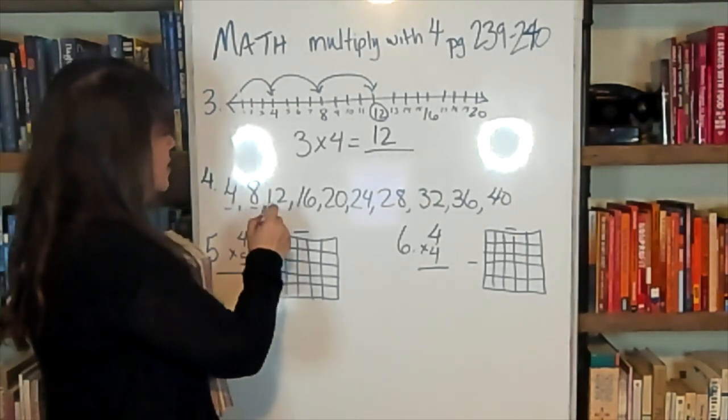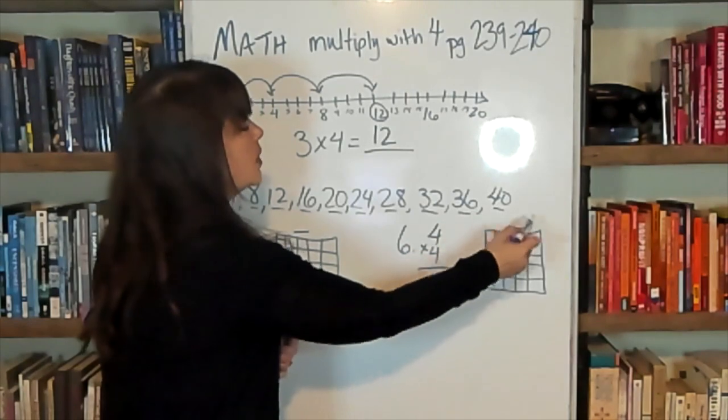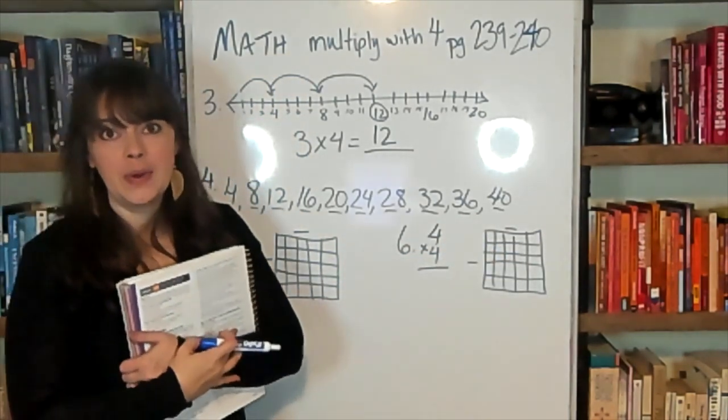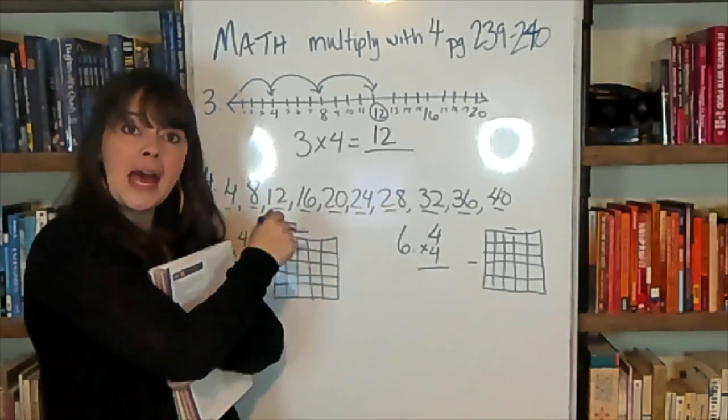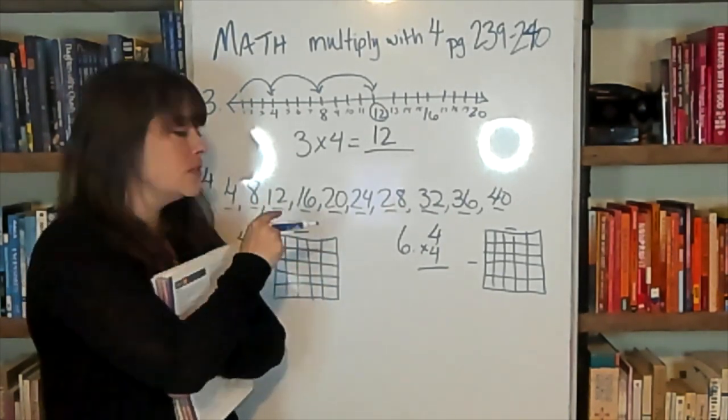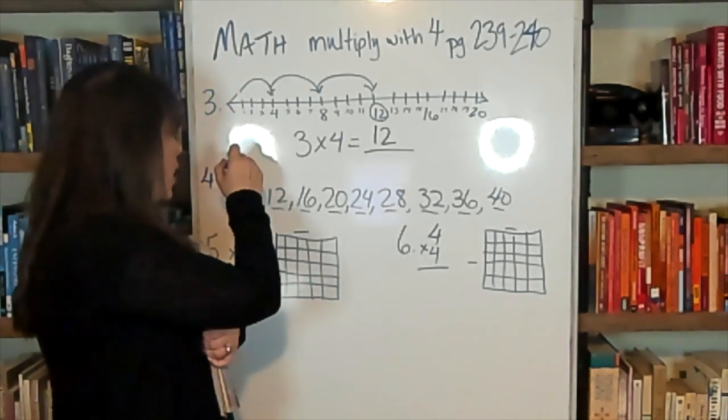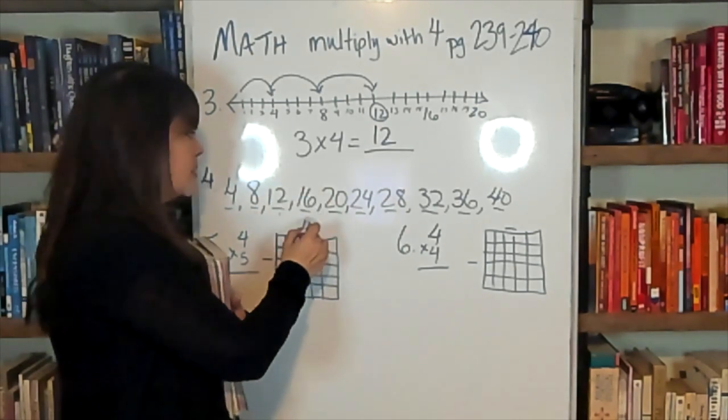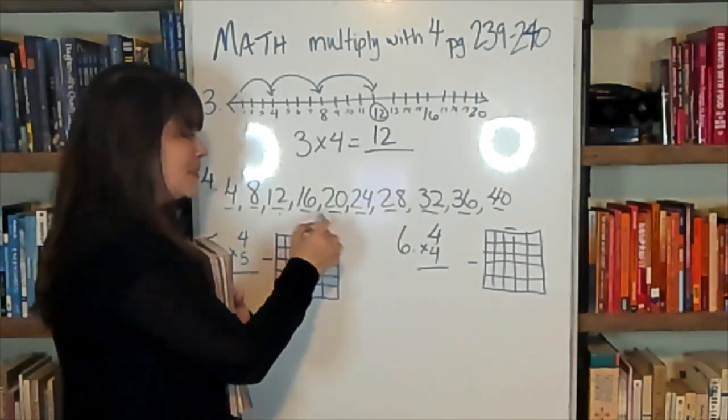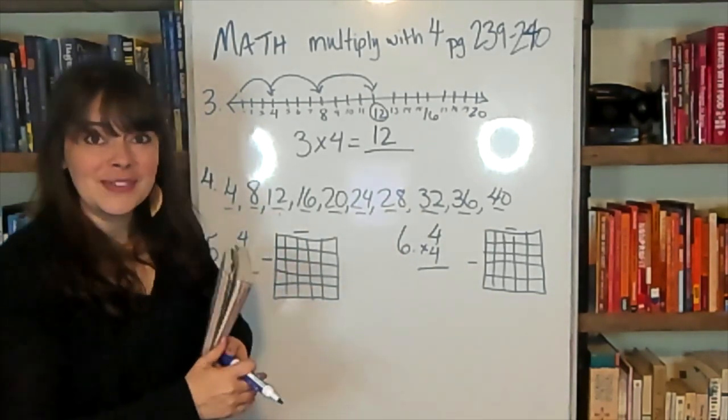So all of these represent a 4's multiplication problem. So if you're working on another problem and you're not sure if you can find the answer, come back to where you've skipped counted by 4's and find your answer there. 4 times 1 is 4, 4 times 2 is 8, 4 times 3 is 12, 4 times 4 is 16, 4 times 5 is 20. These are the answers to multiplying by 4's.